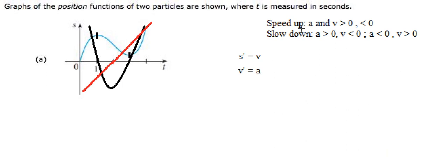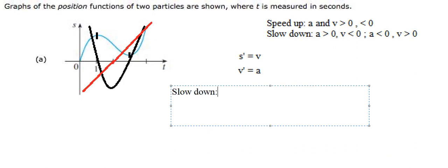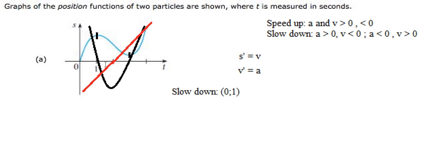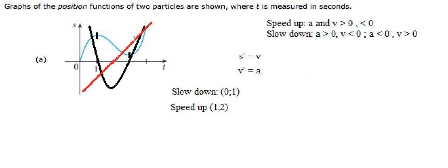Now we can analyze which one is speeding up and which one is slowing down. From 0 to 1, we can see that velocity is positive but acceleration is negative, so that is slowing down in the interval from 0 to 1. Next, from 1 to 2, you can see the dark line is negative and the red line is also still negative, so that is speeding up — interval 1 to 2. From 2 to 3, the red line is positive but the dark line is negative, so this is slowing down — interval 2 to 3.